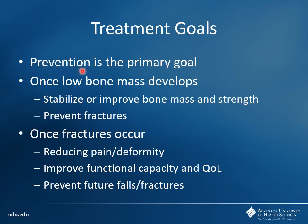Prevention is key. If we can screen patients early, look at their DEXA Z-scores, and make sure bone mineral density is adequate, that's the best thing for them. It's very hard to get bone density back once it's lost; it's much better to keep it where it is. Once a fracture actually occurs, the main goal is preventing further falls and fractures, since one fall tends to beget others and causes significant pain and potential deformity.